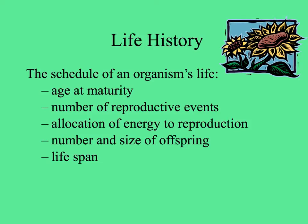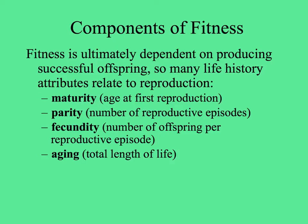Before we talk about details of seeds, seedlings, and seed dispersal, let's look at the life history of a plant. From ecology, the life history is basically the schedule of an organism's life: how old they have to be before they reproduce, the number of times they reproduce during their lives, how they allocate energy to reproduction, how many and how big the offspring are, and how long the individual lives. Fitness depends on producing successful offspring, so most life history attributes relate to reproduction.